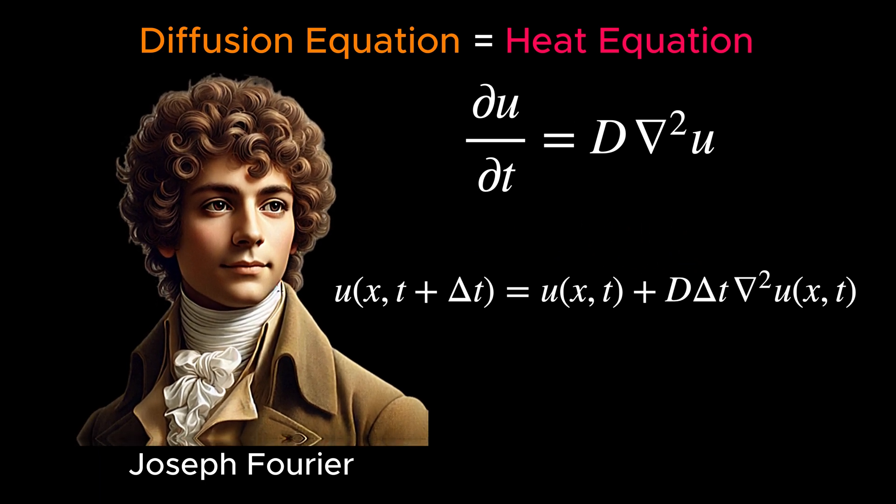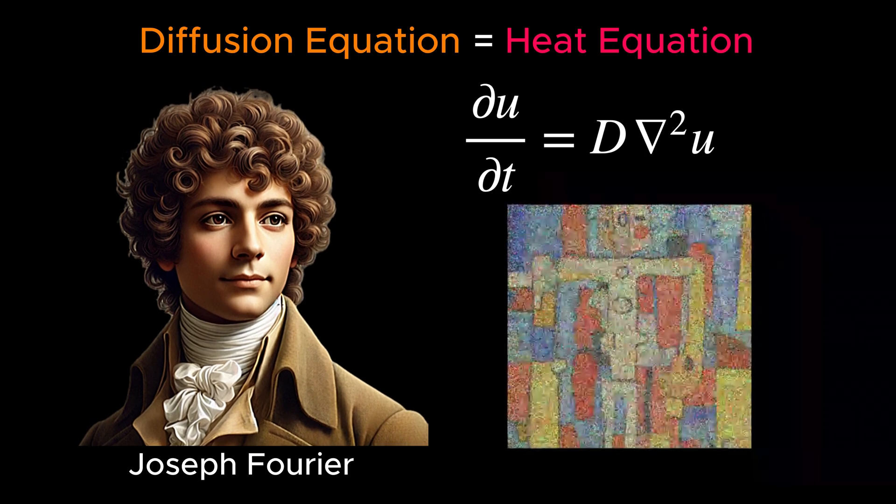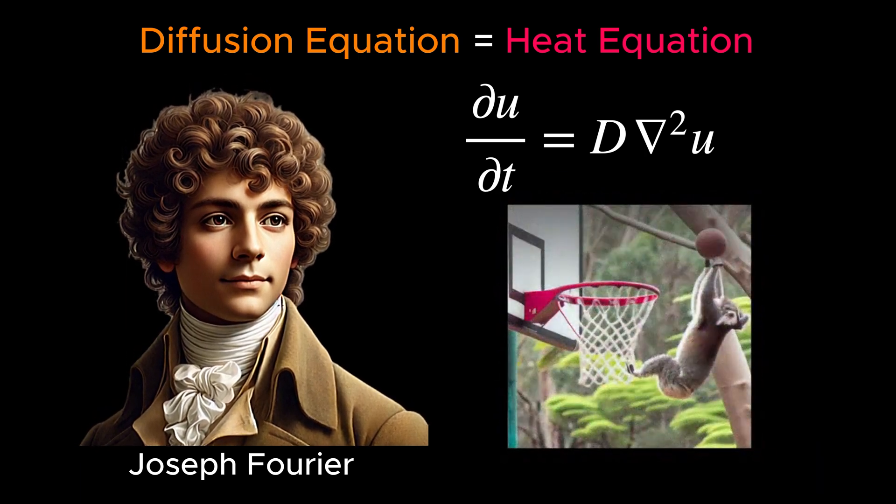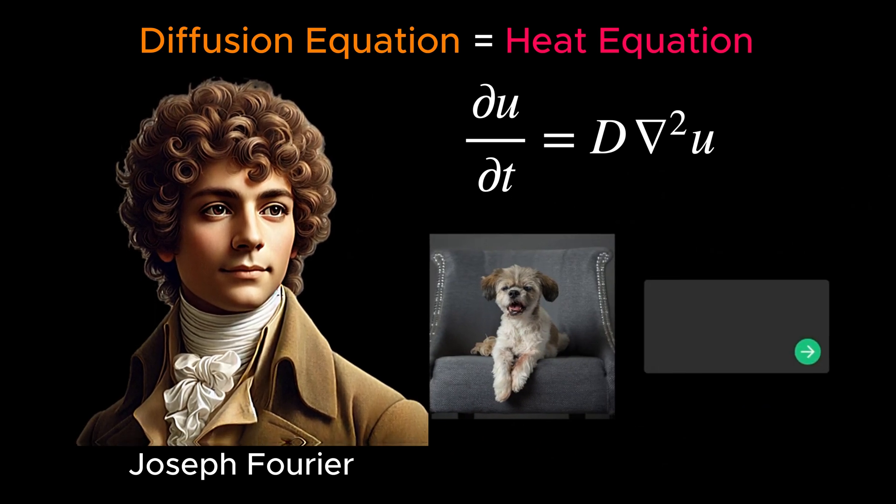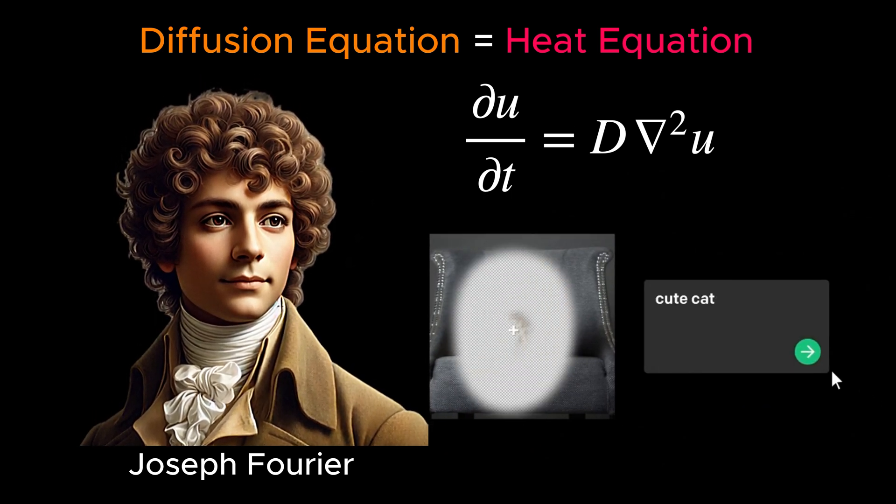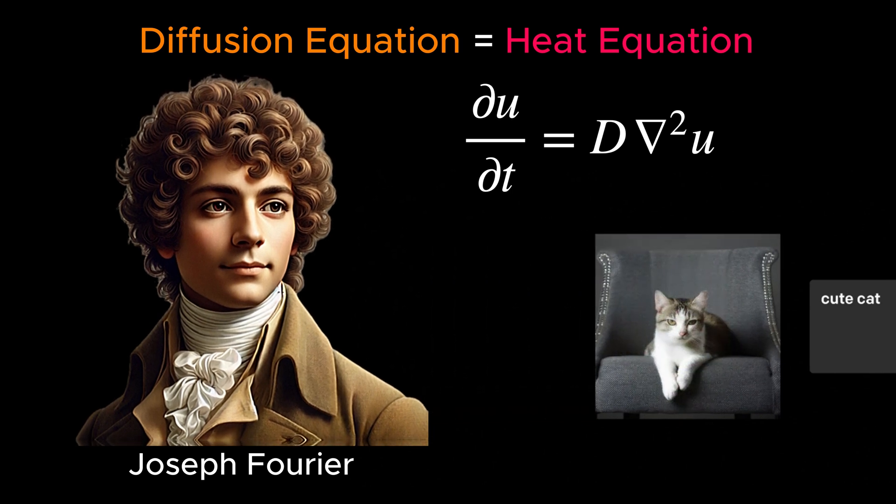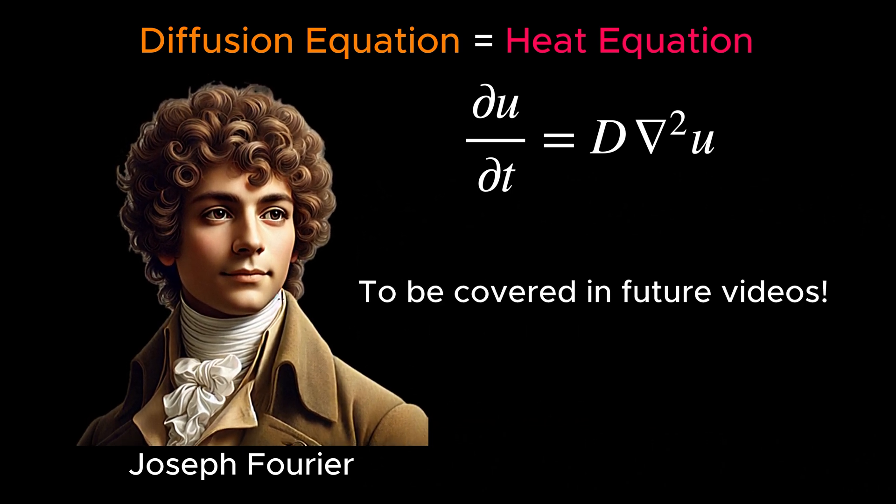Now let me surprise you a bit. This equation is the backbone of most modern AI image generators like DALL-E of OpenAI, Imagen by Google, MidJourney, and Stable Diffusion by Stability AI. We will explore these models and how they use the diffusion model in future videos.